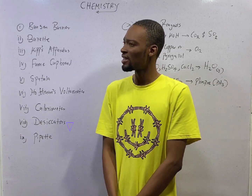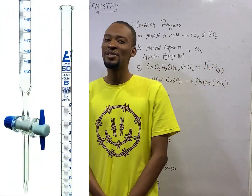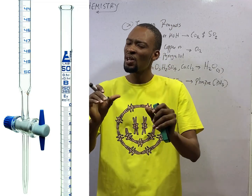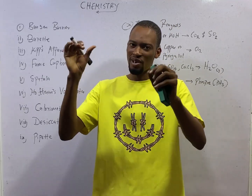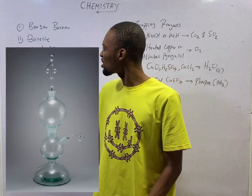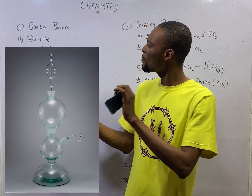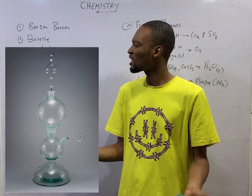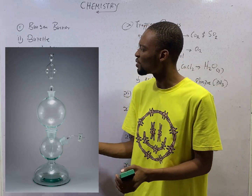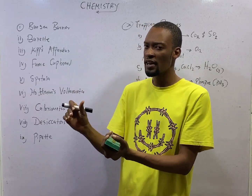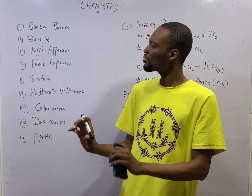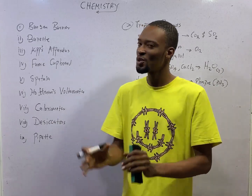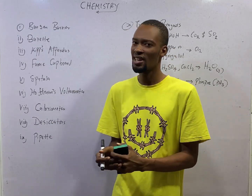Then we have the burette. The burette is used in acid-base titration to measure the volume of acid. Kipp's apparatus is used for preparation of gases which are needed intermittently. For example, we use Kipp's apparatus to prepare hydrogen sulfide (H₂S), carbon dioxide (CO₂), and hydrogen gas.